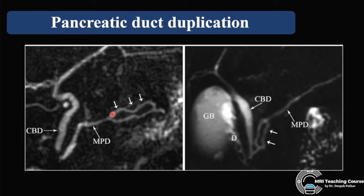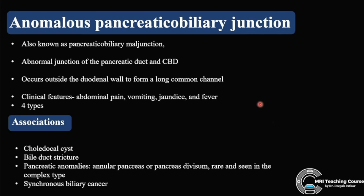There are a few more variations: pancreatic duct duplication, where distal duplication or proximal duplication can be seen — similar to how we see fenestration in MRI angiography of the brain, this is like that fenestration.